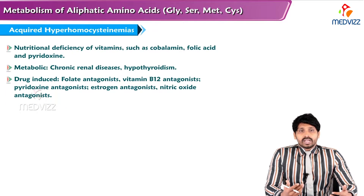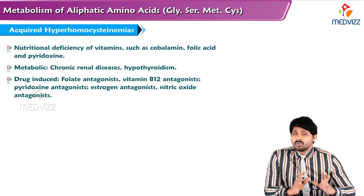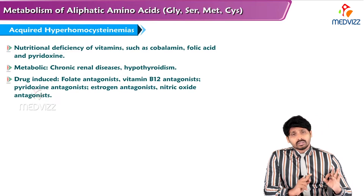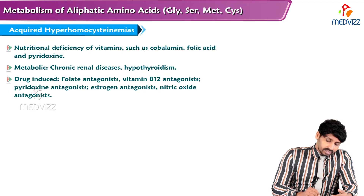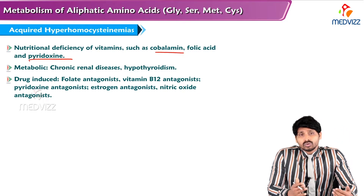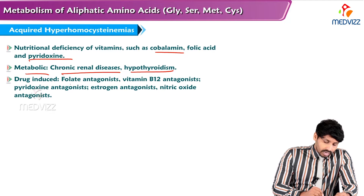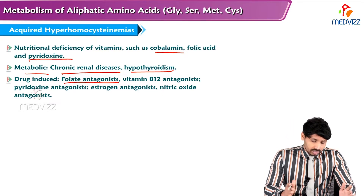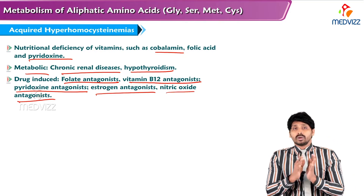Acquired hyperhomocysteinemia results from nutritional deficiency of vitamins. In methionine metabolism, the crucial roles are played by water-soluble vitamins such as PLP, B9 (folic acid), and cobalamin (B12). Nutritional deficiency of cobalamin, folic acid, and pyridoxin leads to acquired hyperhomocysteinemia. It may also exist in metabolic chronic renal diseases and hyperthyroidism. Drug-induced causes include folate antagonists, vitamin B12 antagonists, pyridoxin antagonists, estrogen antagonists, and nitric oxide antagonists, all of which can cause acquired hyperhomocysteinemia.